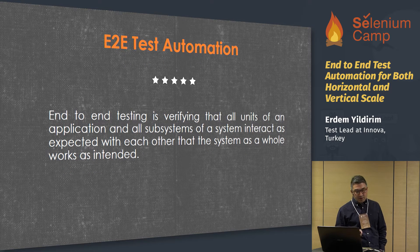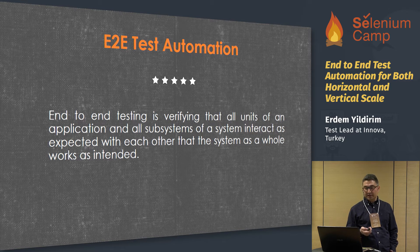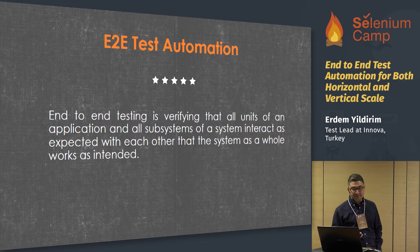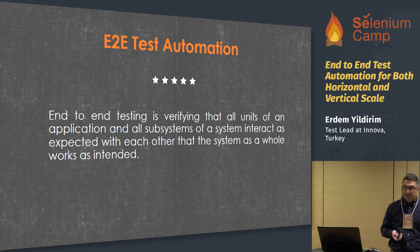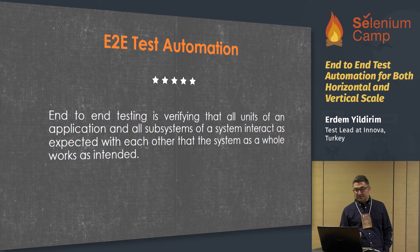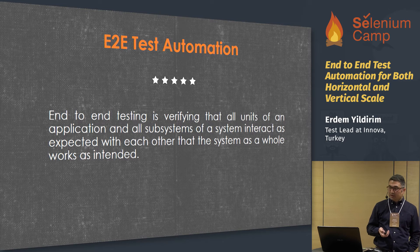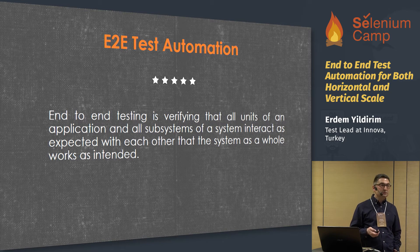End-to-end test automation is verifying that all units of an application and all subsystems of a system interact as expected with each other, and that the system as a whole works as intended. Automating tests in this style is called end-to-end test automation in the literature, and especially it's called horizontal ETU test automation.